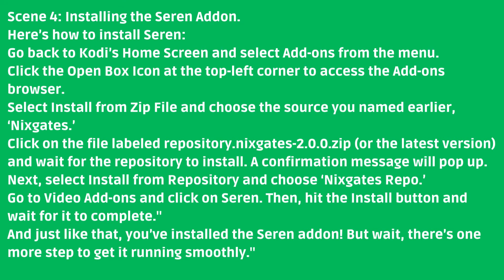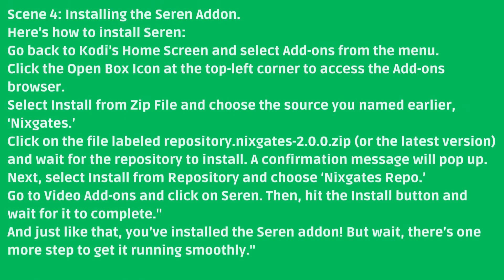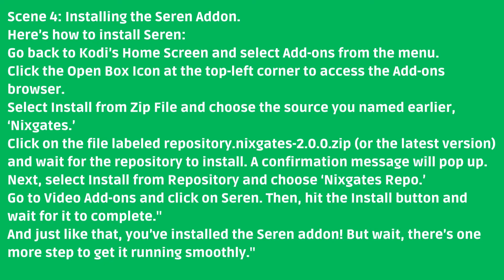Here's how to install Seren. Go back to Kodi's home screen and select Add-ons from the menu. Click the Open Box icon at the top left corner to access the Add-ons browser. Select Install from Zip File, and choose the source you named earlier — Nixgates. Click on the file labeled Repository.Nixgates.2.0.